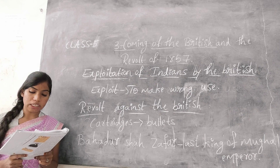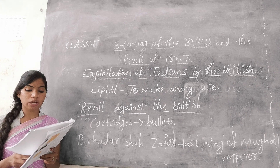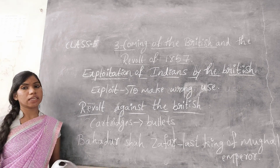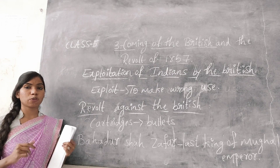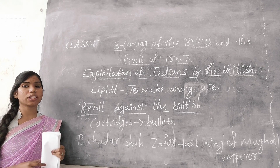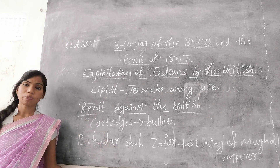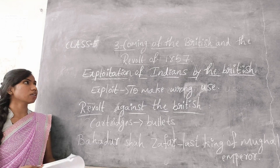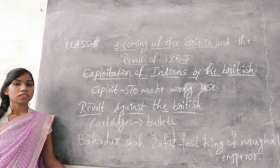After the revolt, Indians realized that if the whole of India had been united, the British would have never succeeded. Now your third chapter is completed. Read whatever we have discussed in this chapter.